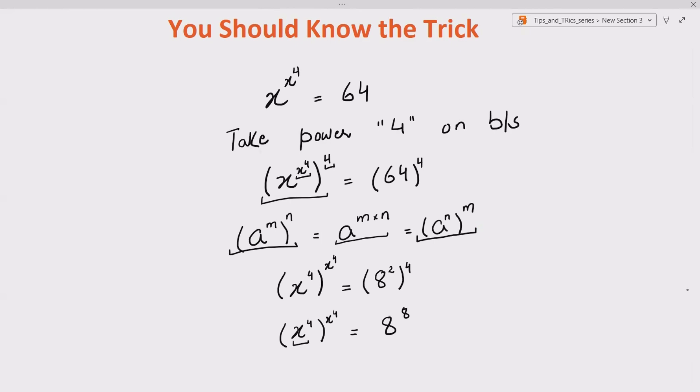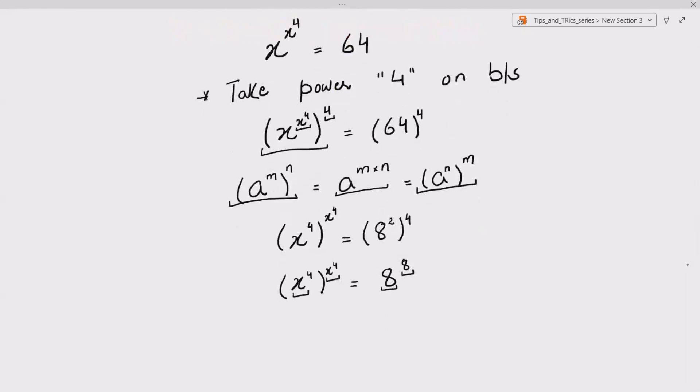Now here you can see x raised to the power 4 equals 8. So actually this step, take power 4 on both sides, gives us this situation in which base and exponents are same on both sides. So it means x raised to the power 4 equals 8. That's what the exponent is saying to us, that's what the base is saying to us.